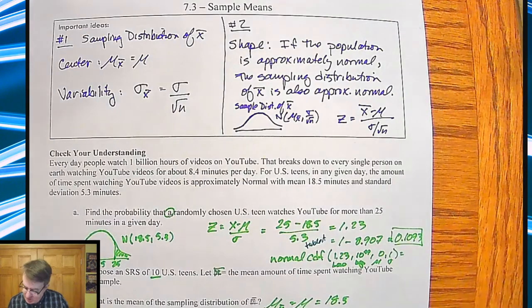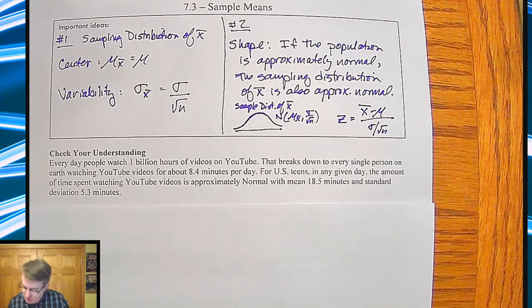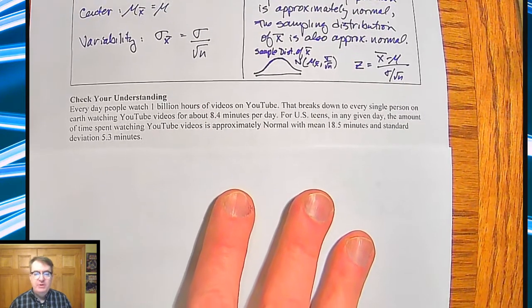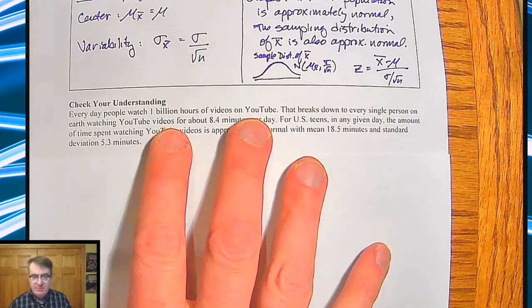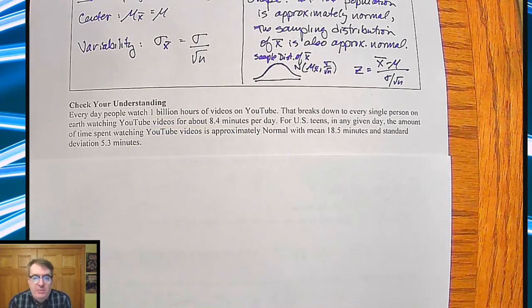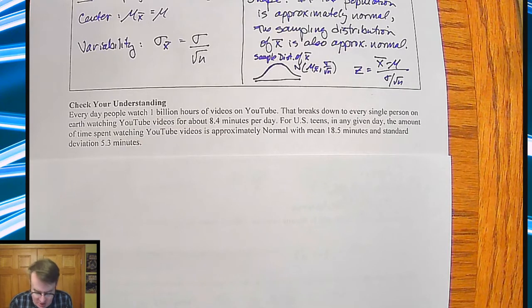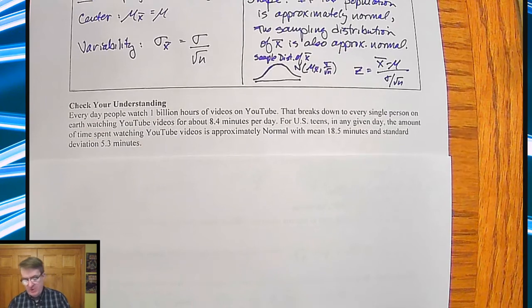Now, for your practice question here, we're going to talk about YouTube views. And this was probably, I'm going to guess this has gone up since then. But every day, people watch 1 billion hours on YouTube. So it works out to about 8.4 minutes per day. For U.S. teens, they watch about 18.5 minutes a day, and there's a standard deviation of 5.3.